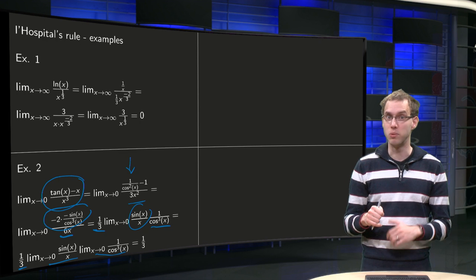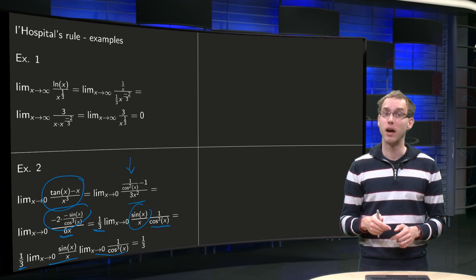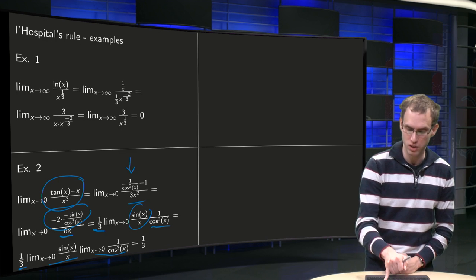So we get 1/3 times 1 times 1 equals 1/3. So there we have our nasty limit, because we had to apply L'Hopital twice, and actually if you don't know the sin(x) over x, you have to apply L'Hopital even 3 times in this exercise.